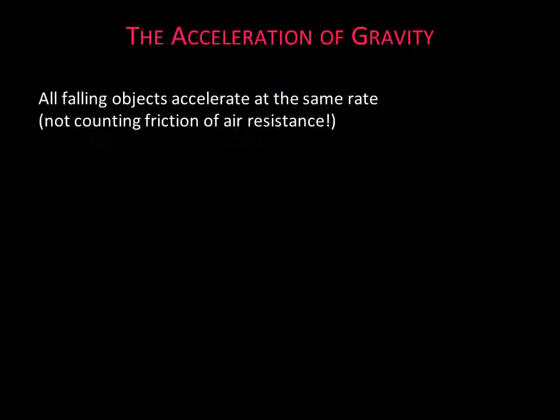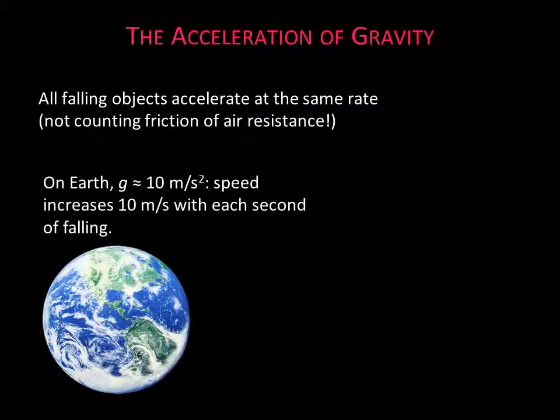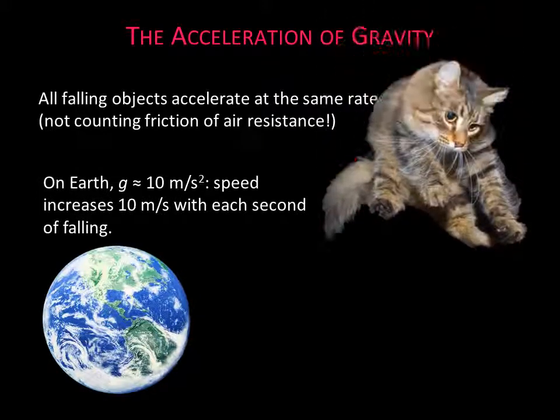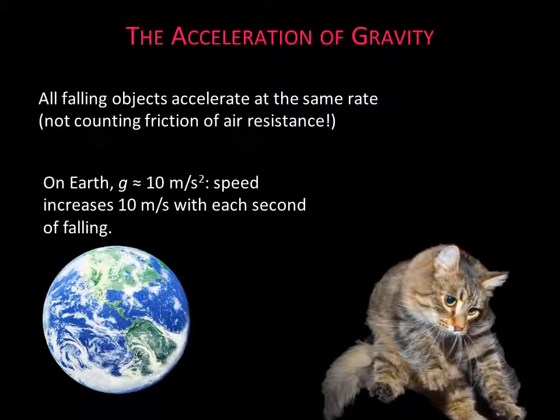The acceleration of a falling object is called the acceleration of gravity, abbreviated G. On Earth, the acceleration of gravity causes falling objects to fall faster by about 10 meters per second with each passing second.